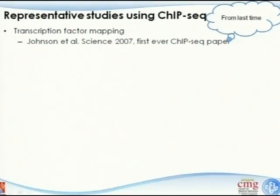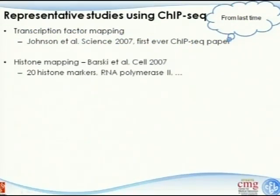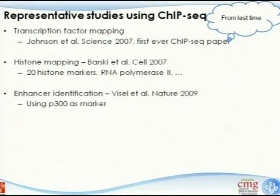Several landmark studies used this technology. The first ChIP-seq paper was published in Science in 2007, mapping one well-defined transcription factor binding site to validate whether the technology works. The same year in Cell, another paper used ChIP-seq to understand histone mapping — designing antibodies to target different histone modification markers to understand how chromatin modification is organized genome-wide. Enhancer identification was covered in two Nature papers using P300 as a marker to identify active enhancer regions.